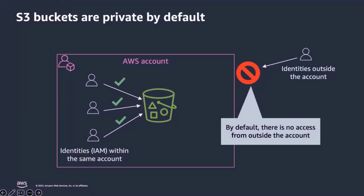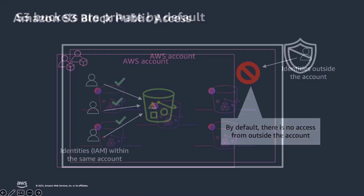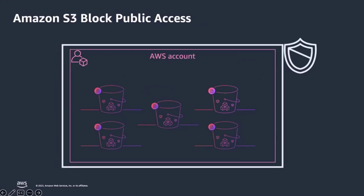By default, your S3 buckets are private. Identities outside your AWS account have no access to your S3 resources. However, users can modify bucket policies or object permissions to allow public access. S3 block public access prevents new settings and overrides existing settings that would make S3 resources publicly accessible.